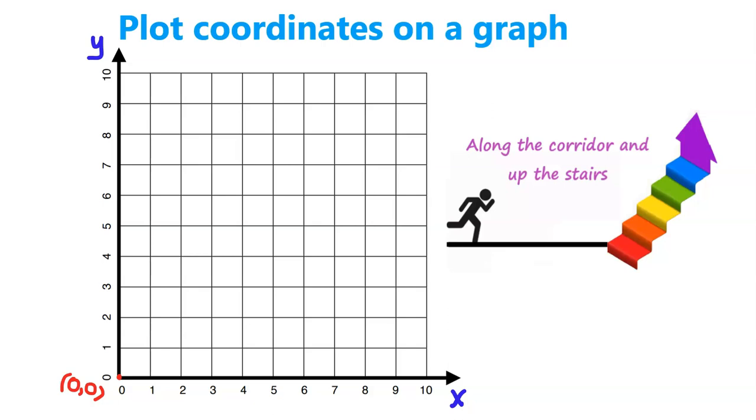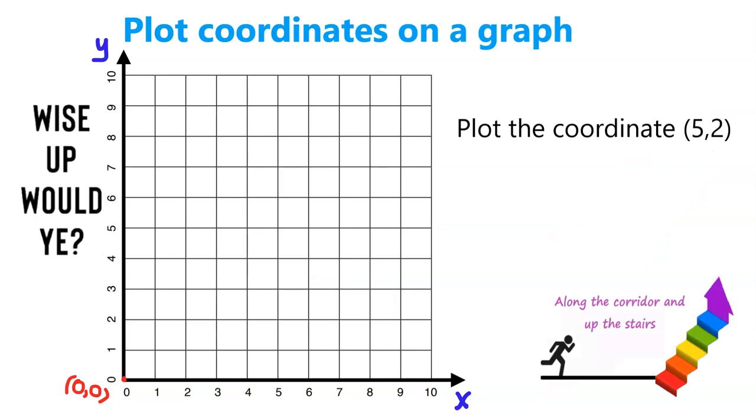We'll start at the origin and we'll go along the x-axis, so along the corridor, and up the stairs, then go vertically up the y-axis. Okay, let's start plotting coordinates.